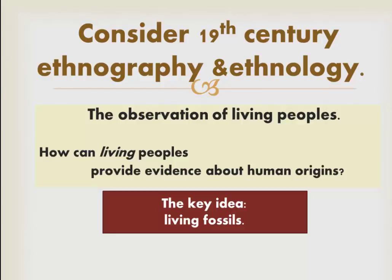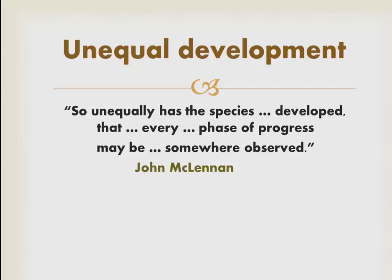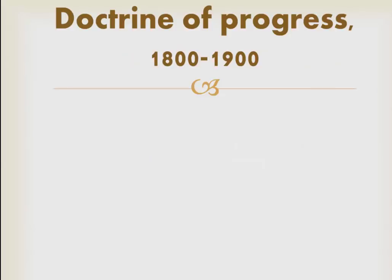This was the fundamental idea behind 19th century ethnography and ethnology — the idea of unequal development. This is a quote from Scottish ethnologist John McLennan: 'So unequally has a species developed that every phase of progress may be somewhere observed.' This idea, continuous with Locke's observation, was repeated by many Enlightenment and post-Enlightenment thinkers. In the context of European conquest and exploitation of peoples around the world, it had tremendous political implications. This is sometimes called the doctrine of progress.